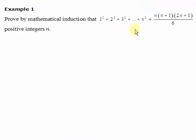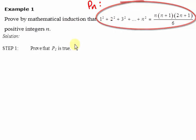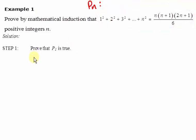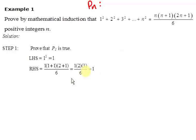In this example, we are going to prove this mathematical statement is true by mathematical induction. We first let Pn be this expression. For step one, we are going to prove that P1 is true. The left-hand side of P1 will be just 1 squared, which gives us the value of 1. For the right-hand side, we substitute n by 1, and we get this expression. The left-hand side and right-hand side have the same value. Therefore, P1 is true, and we have completed step one of mathematical induction.